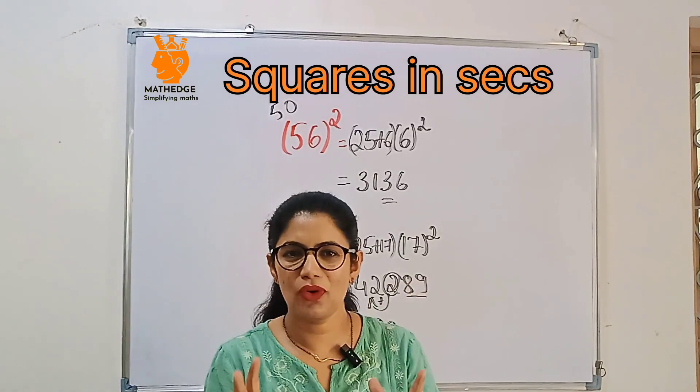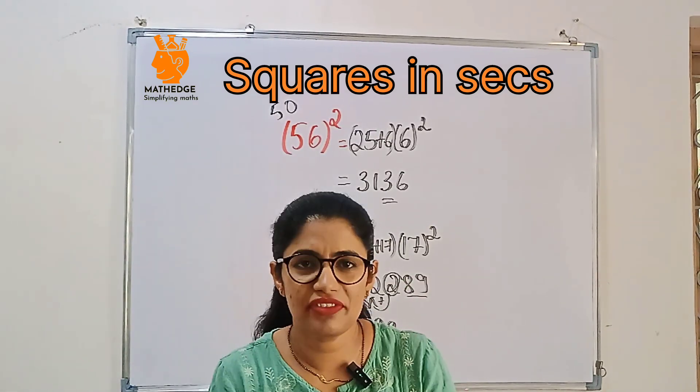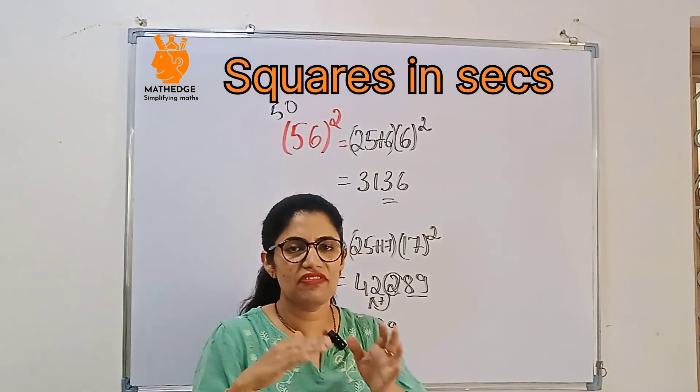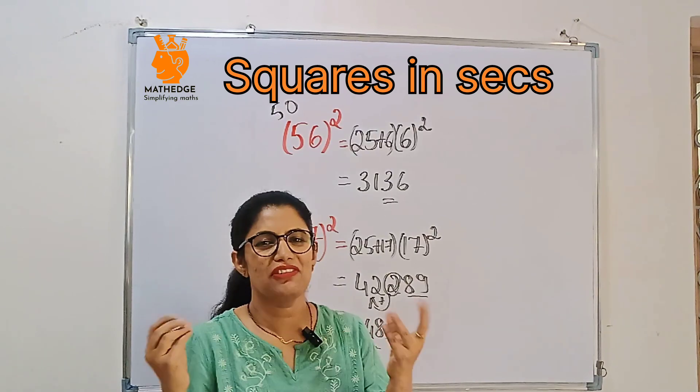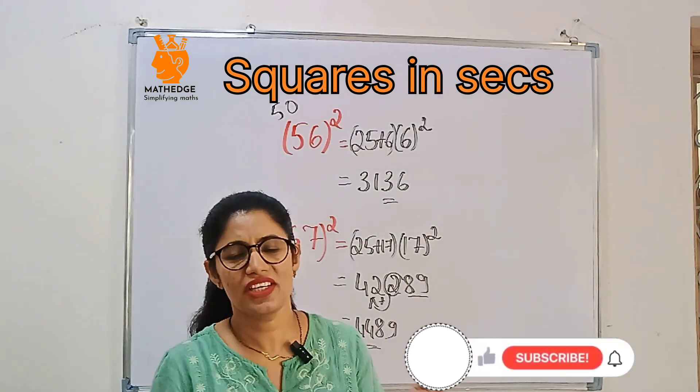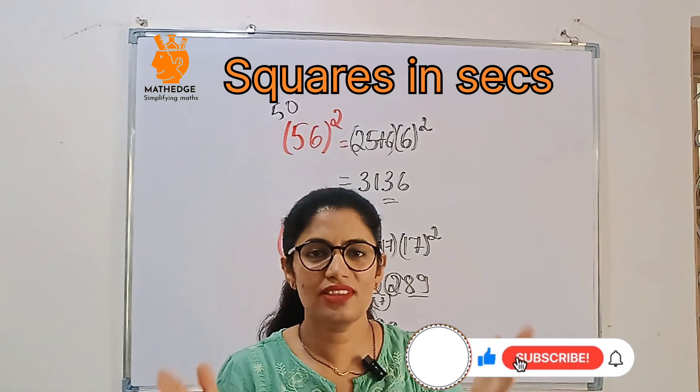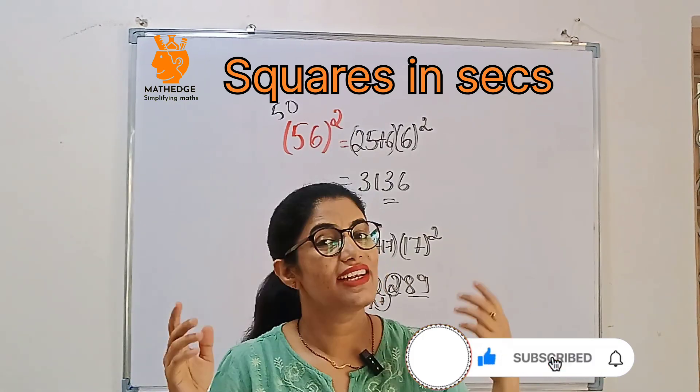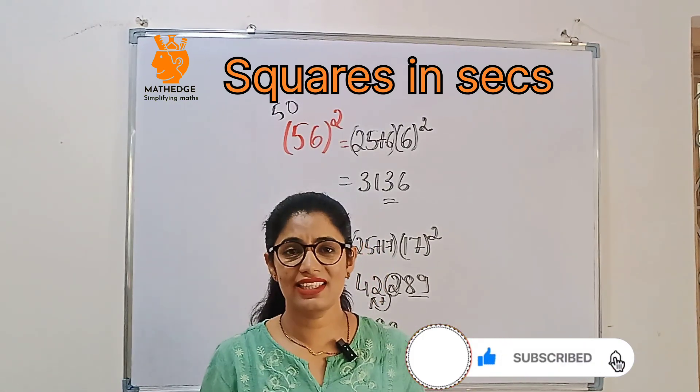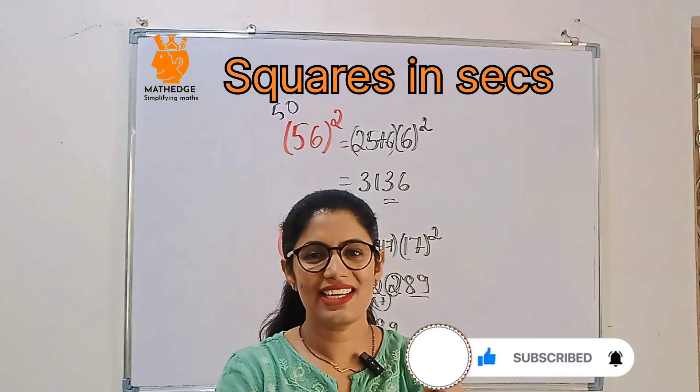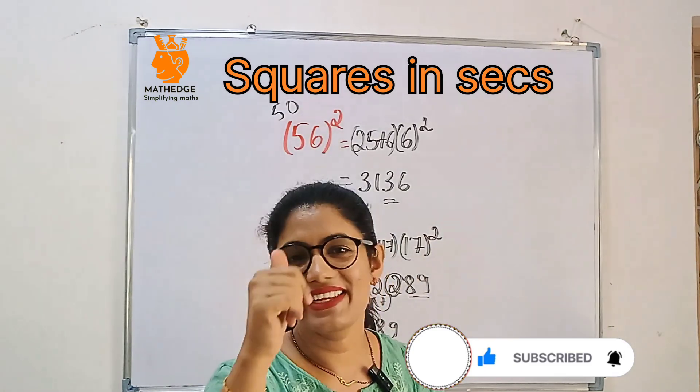The key here is to spot how close to 50, either less than 50 or greater than 50. So once you understand that, it's easy to do. So that's it for today's trick. If you love this trick, hit the like button, share it with your friends and family, and subscribe for more Vedic math hacks like this. See you in the next video. Till then, sign off. Math hack and keep smart.